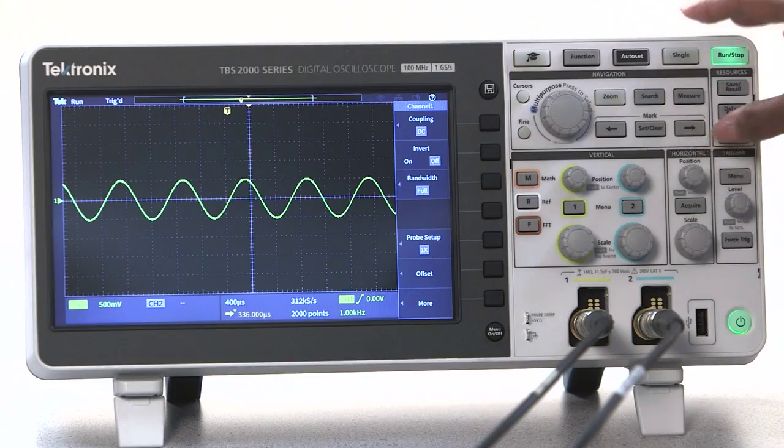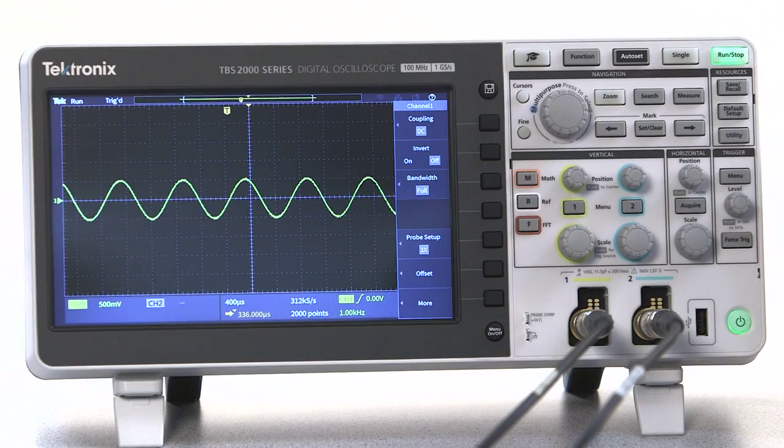The horizontal controls determine the x or time axis on the display. The most important controls are the horizontal scale and horizontal position.